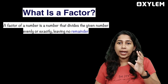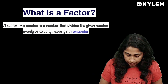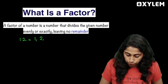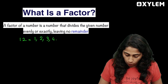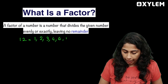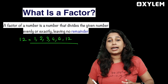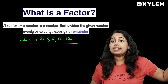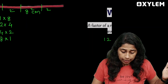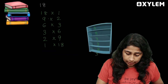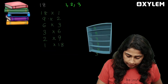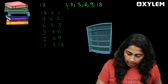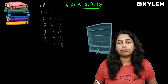Factors. For example, if you think about the concept: the factors of 12 are 1, 2, 3, 4, 6, and 12. These are the factors of 12. The factors of 18 are 1, 2, 3, 6, 9, and 18. These are the factors of 18.